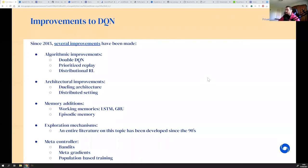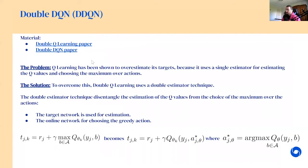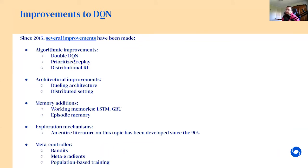Now let's look at all those improvements one by one. Starting with algorithmic improvements — there have been some tweaks on the Bellman equation. This is the case of Double DQN. A question this morning was about how we can take the best data from the replay, and the answer is the prioritized replay technique. Some people have also been interested in not just looking at the expected sum of reward, but at the entire distribution — understanding the entire random variable of the discounted return. This is called distributional RL.